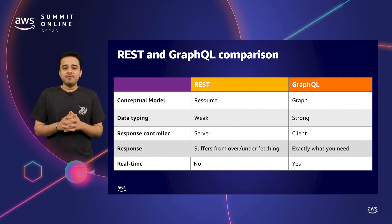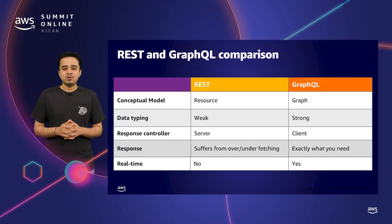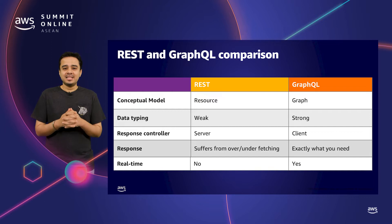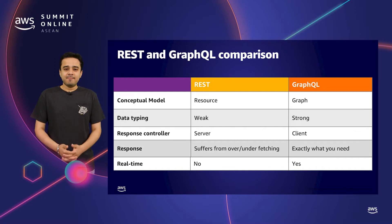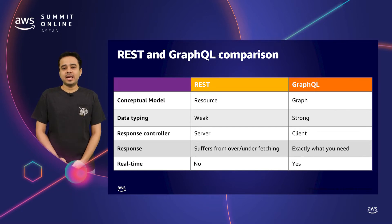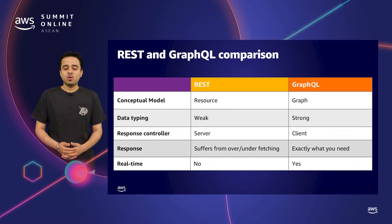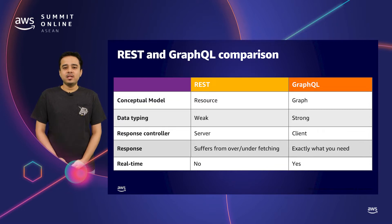Now let's see some of the major differences between both. At a conceptual model, REST talks about the resource — you can think of a resource as a virtual file on the server. When you are expanding REST APIs, you are expanding different URIs. In some ways, you can have a graph of data by having hyperlinks from one resource to another, but GraphQL makes this model explicit. GraphQL's core conceptual model is a graph with nodes, edges, and attributes. GraphQL declares everything as a graph — you say what you want, and you get that.